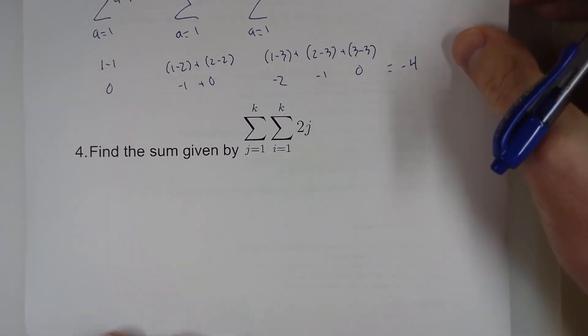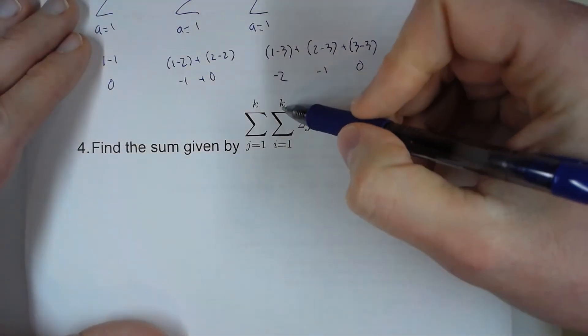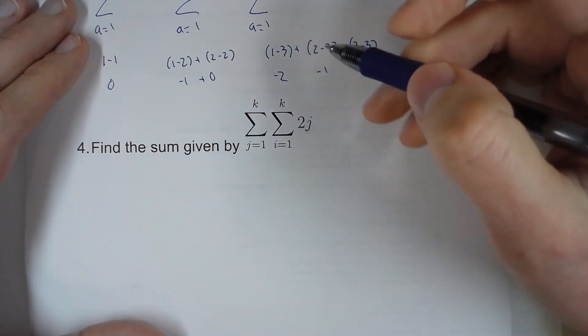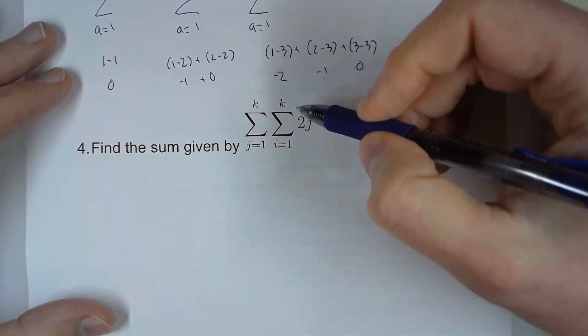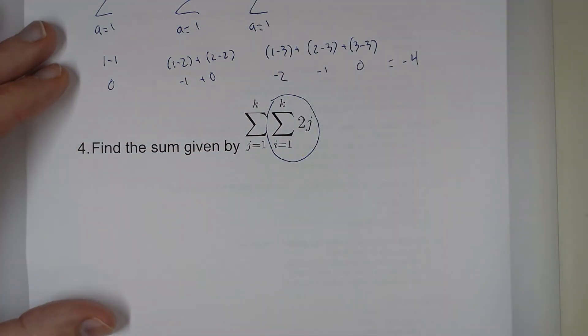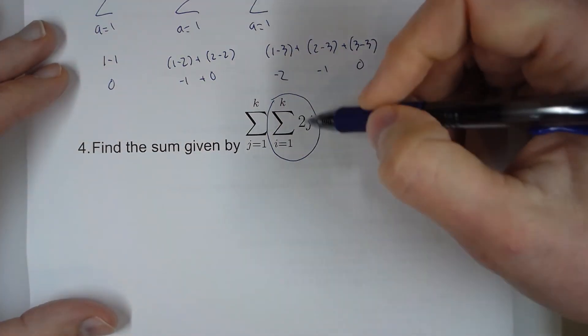And then the last one, here both of these sums add up to k, which is neither of the variables. Now here I'm going to do this like we did numbers 1 and 2. First I'm going to work on this one.